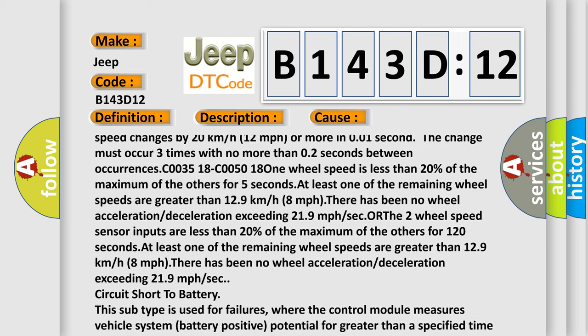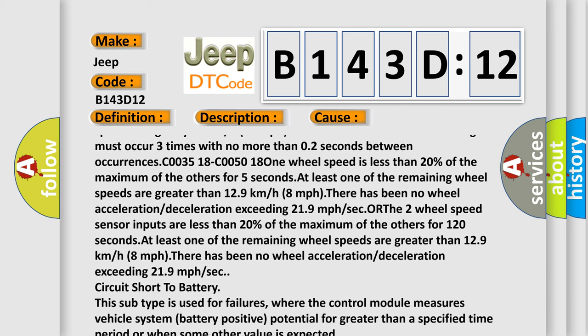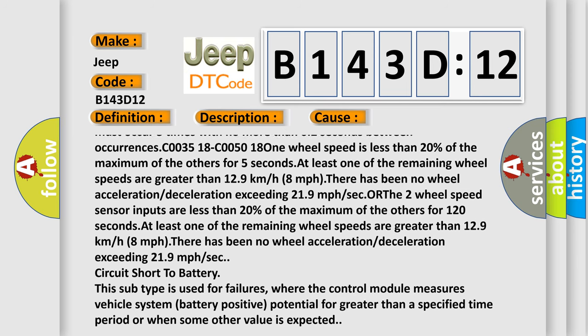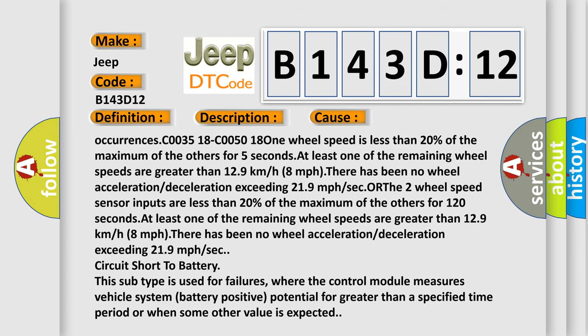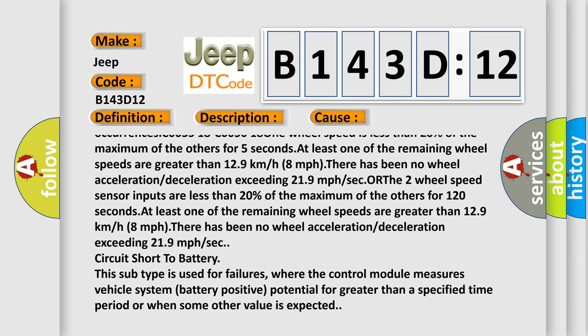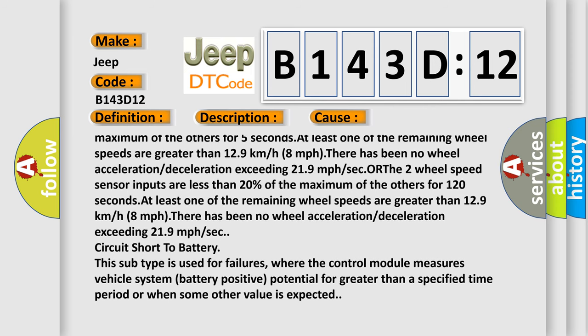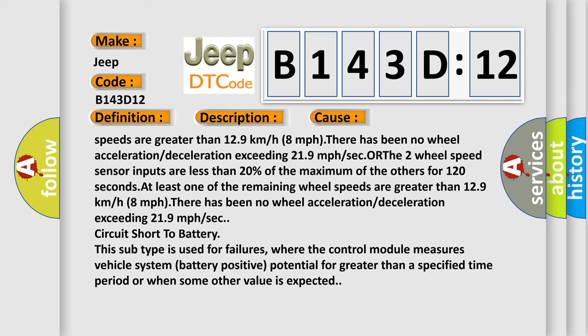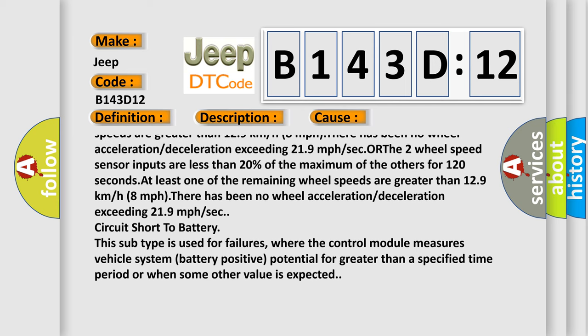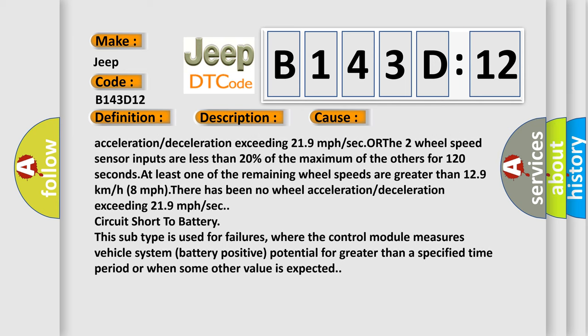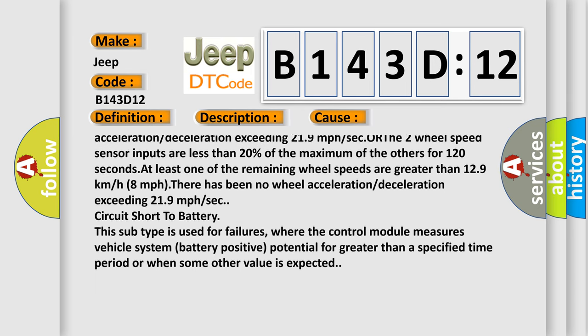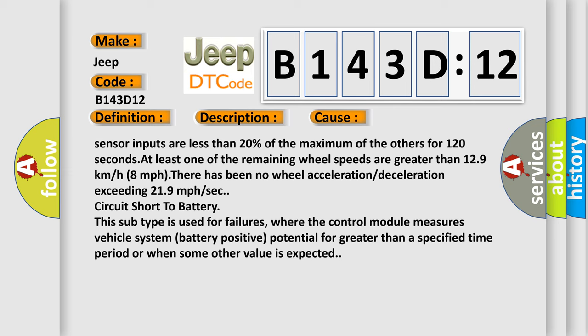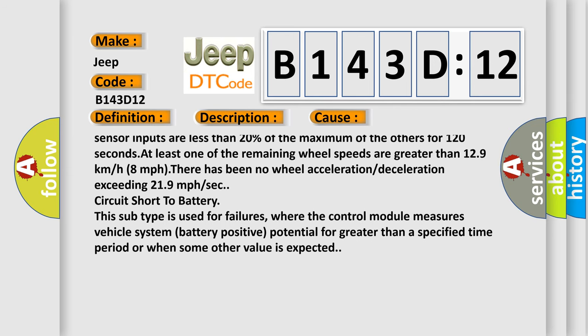C003518C0050181: One wheel speed is less than 20% of the maximum of the others for five seconds. At least one of the remaining wheel speeds are greater than 12.9 km/h, 8 mph. There has been no wheel acceleration or deceleration exceeding 21.9 mph per second. Or, the two wheel speed sensor inputs are less than 20% of the maximum of the others for 120 seconds. At least one of the remaining wheel speeds are greater than 12.9 km/h, 8 mph. There has been no wheel acceleration or deceleration exceeding 21.9 mph per second.